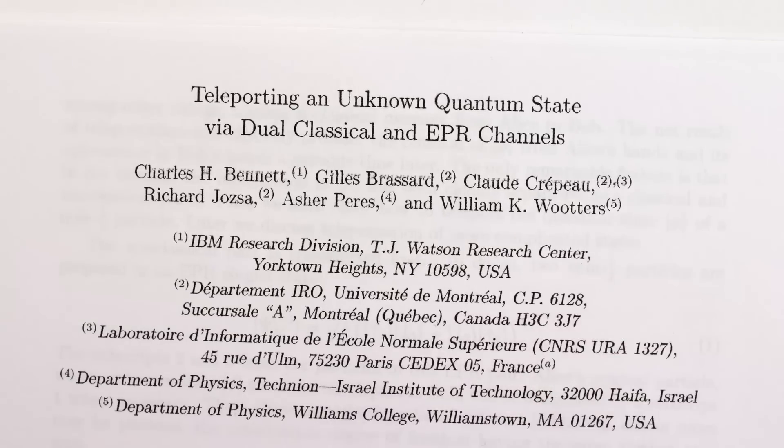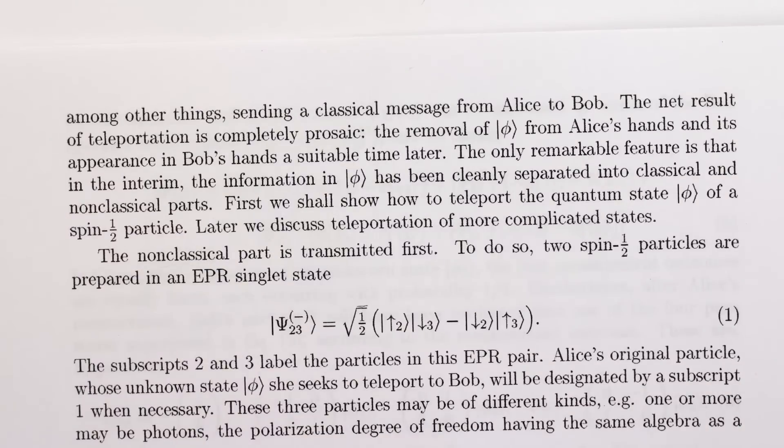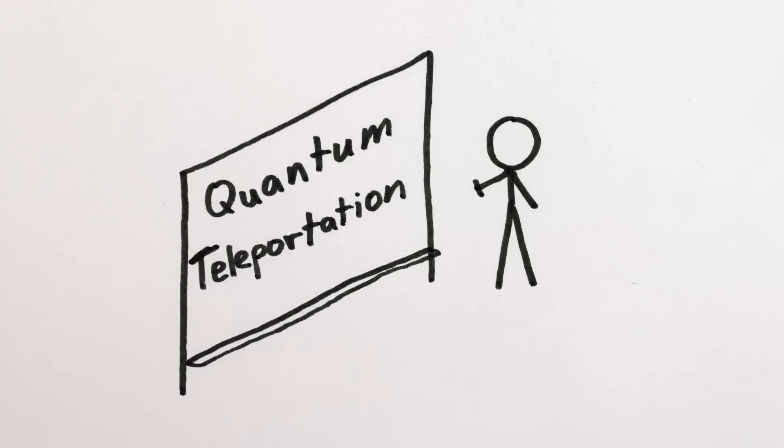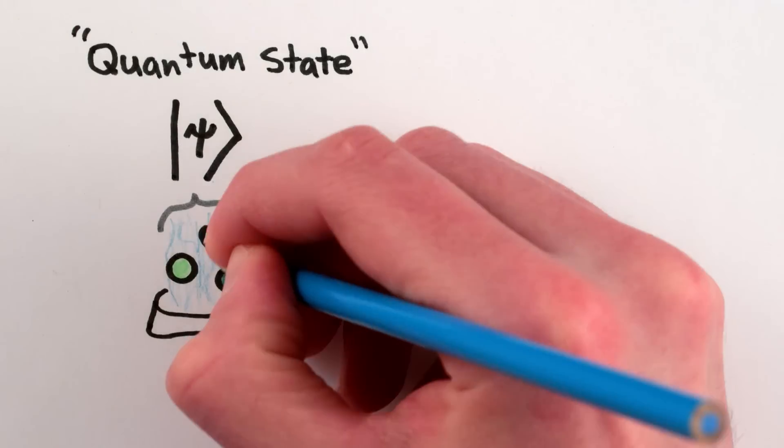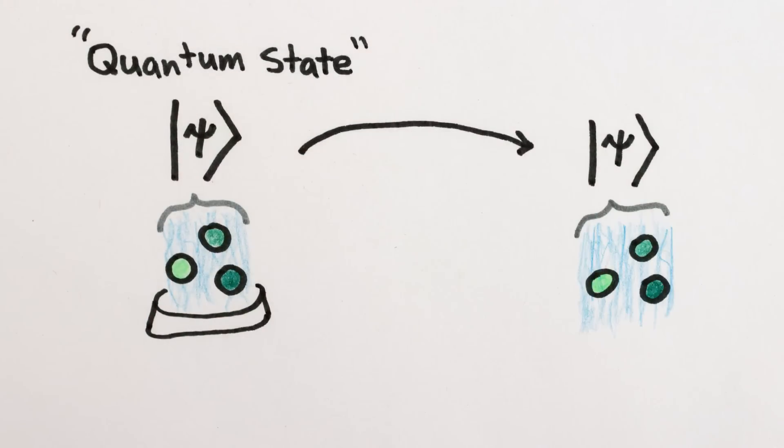Quantum teleportation is the only kind of real teleportation technology we currently have access to, and while I won't go into the details here, the point is you can take some particles in a particular arrangement and transfer their exact quantum condition onto other particles arbitrarily far away. It kind of seems like sad teleportation, because the particles don't move, just their state.